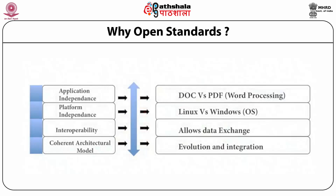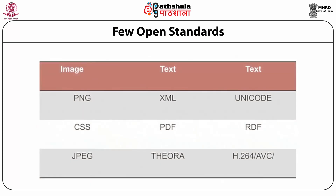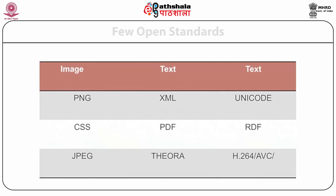In addition, there are open standards. A document file created 20 years ago may not be readable on any platform today. In applications, you can have application independence and platform independence by using open standards. Interoperability allows data exchange. Examples of open standards include PNG for images, XML, PDF, CSS (Cascading Style Sheet), MPEG, JPEG, Unicode for regional languages, and recent standards like RDF and H.264.